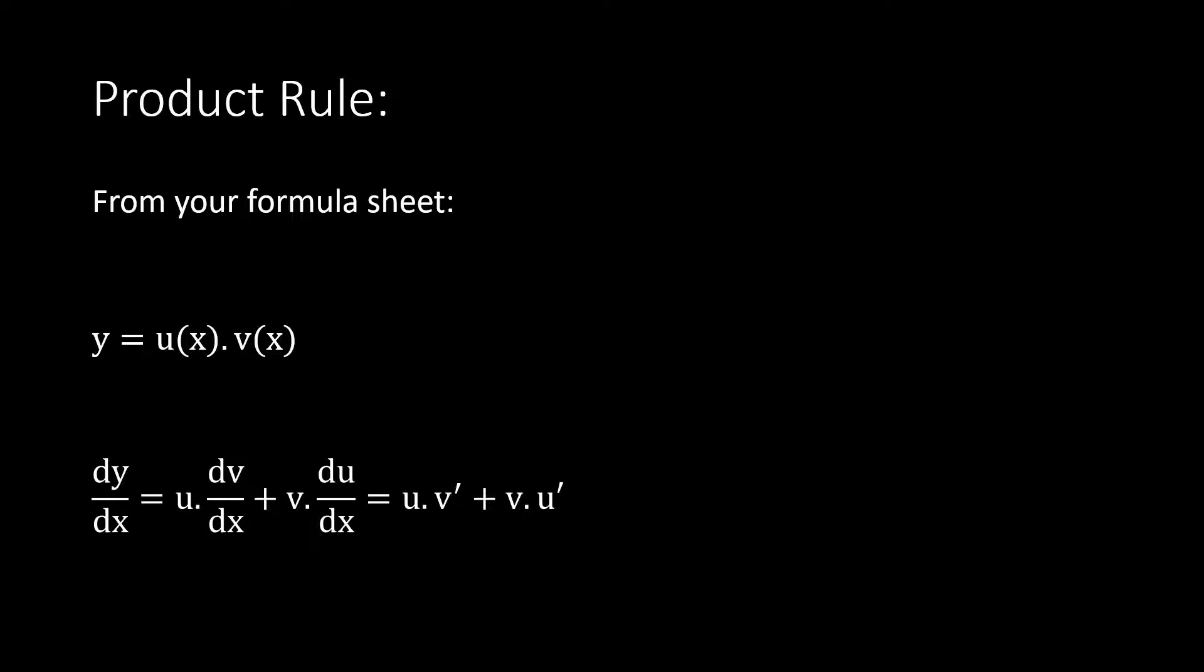For example, if I have y equals sine x times e^x, my answer will be: first u times v prime - if I derive v, e^x doesn't change - plus v times u prime. If I derive sine I'm getting cosine x times e^x. That's my answer, don't simplify.